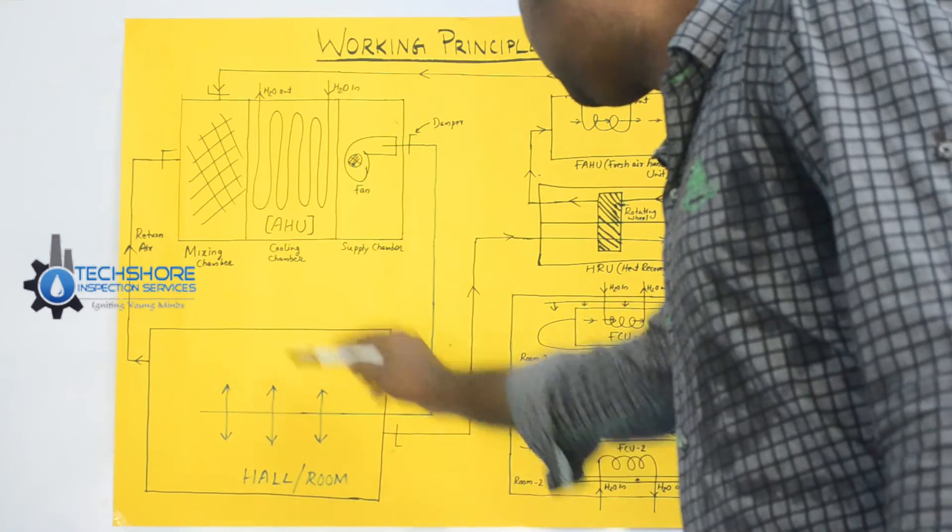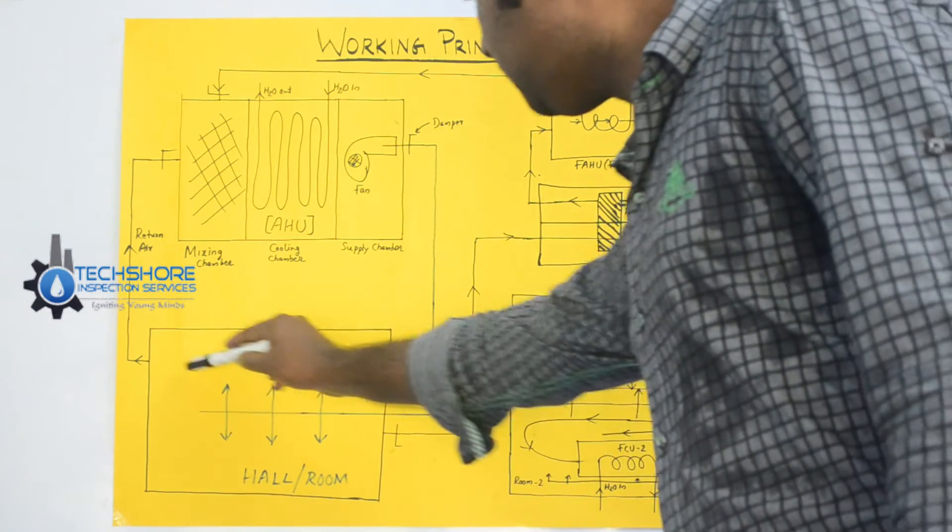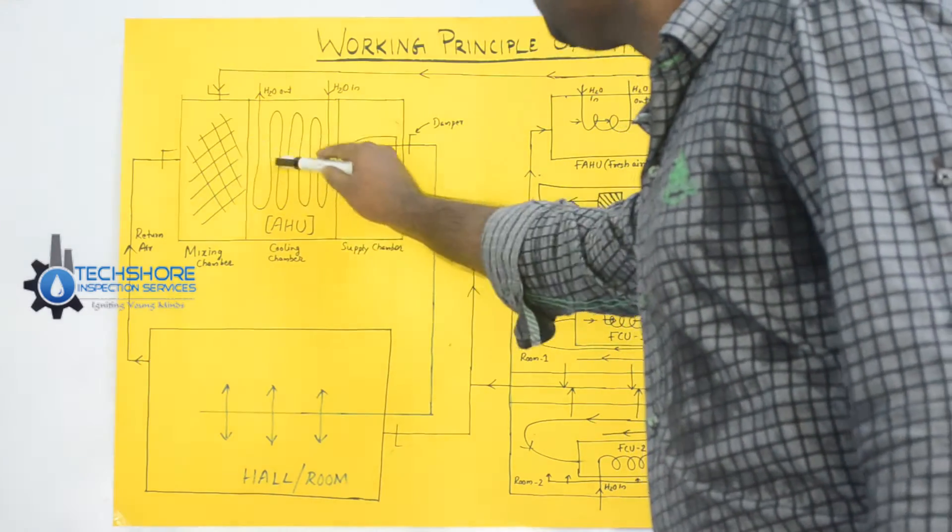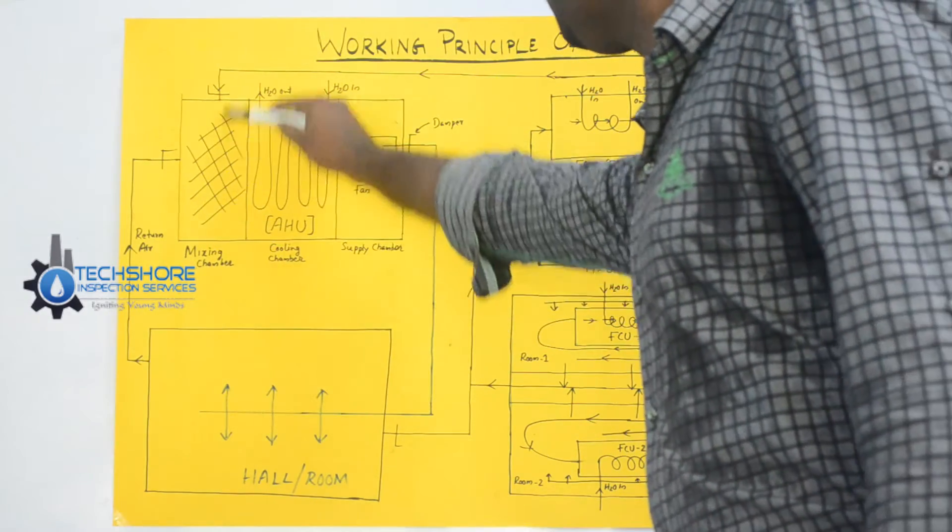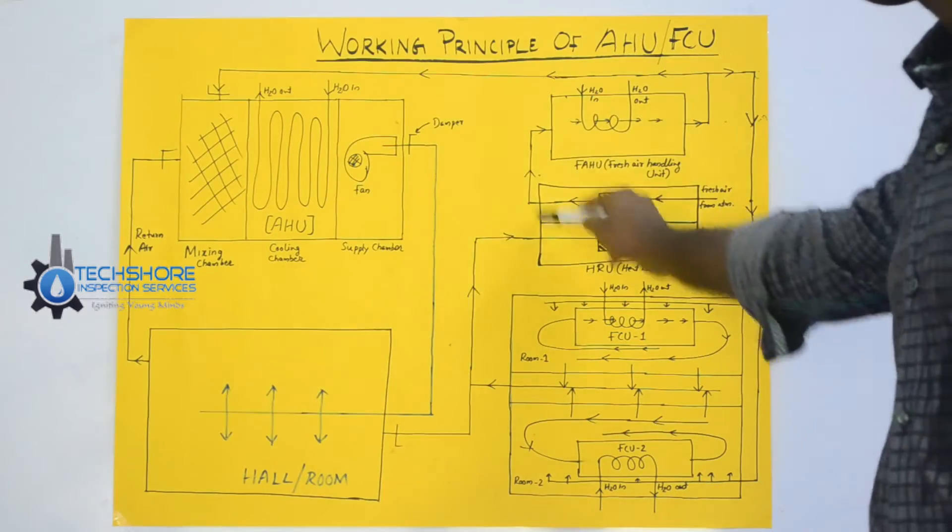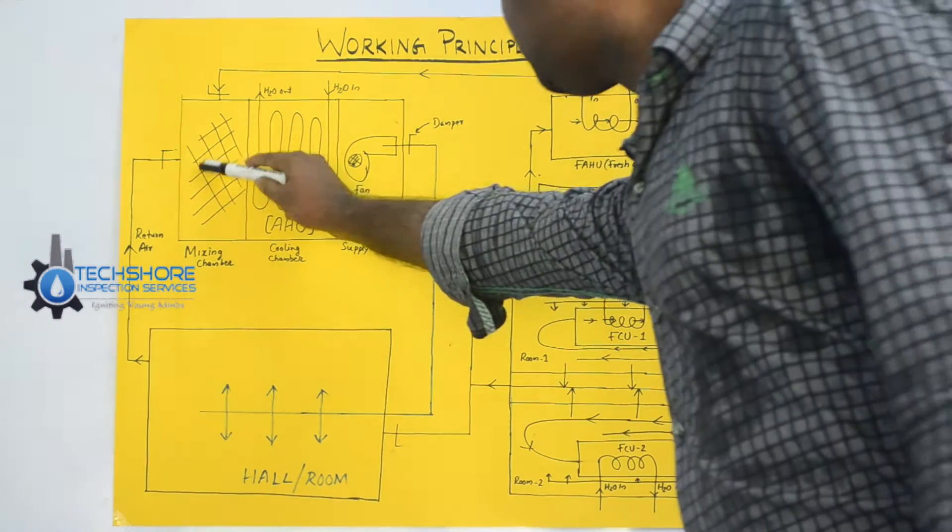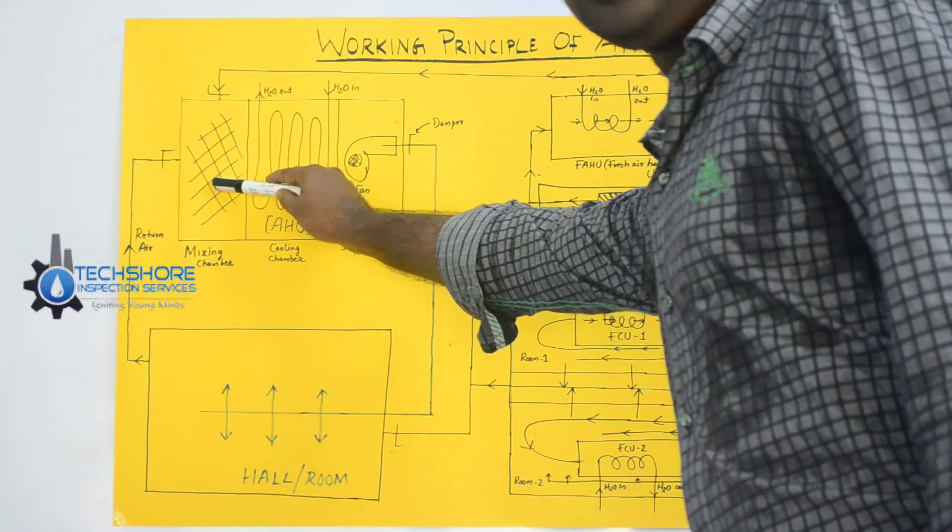Then this, the heart is there. For example, the air is taking this side, mixing chamber. Here also from atmosphere it is taking this air. And then here it is a mixing chamber. That's why it is called mixing chamber.